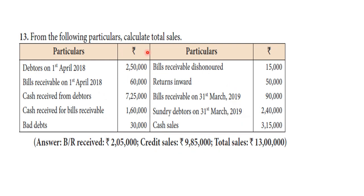To find the total sales, we need to find the cash sales and credit sales separately. Cash sales is 3,15,000. Now we will find the credit sales by preparing the debtors account.